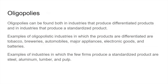The oligopoly is much tighter than monopolistic competition — it's more on the monopoly side. Oligopolies can be found in industries that produce both differentiated products and standardized products. The key difference from monopolistic competition is that there is more concentration in an oligopoly market.